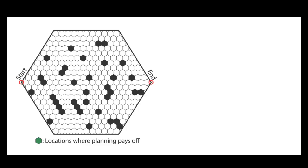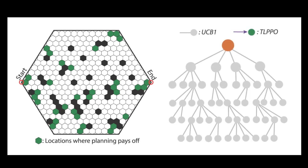TLPPO uses the connectedness of the space to identify places that might contain opportunities. We call those locations where planning pays off, or LPPOs. Then, during a tree search, it creates trajectories that connect those opportunities.